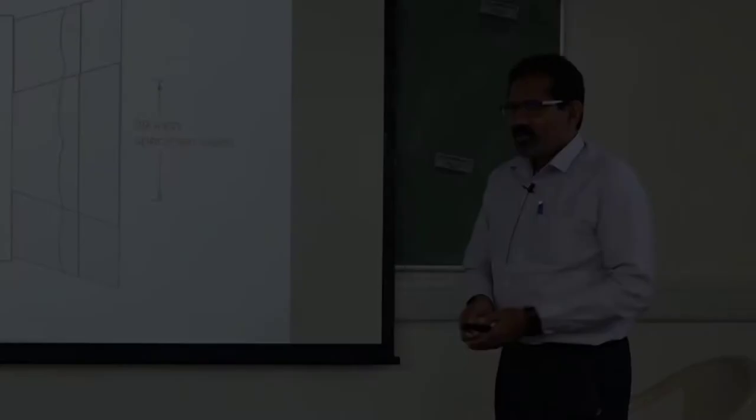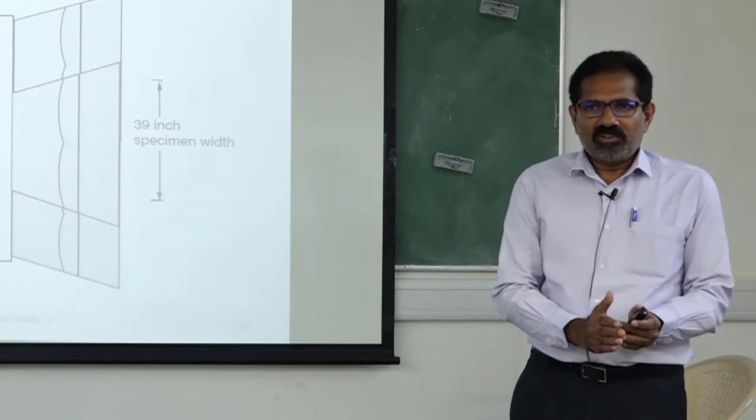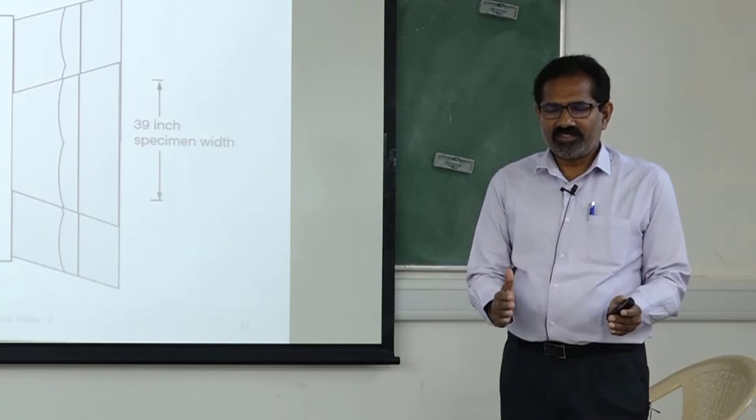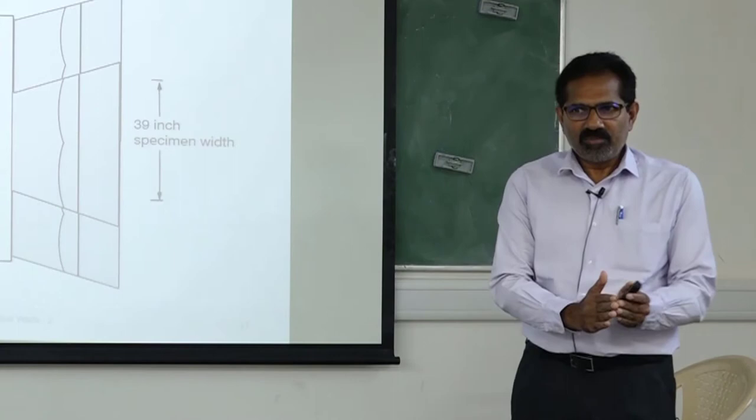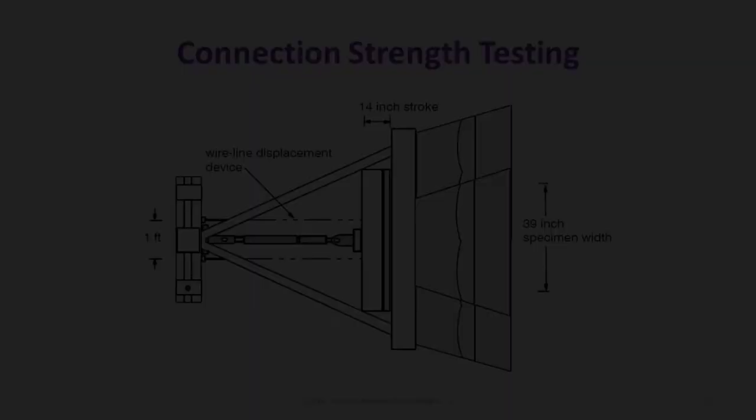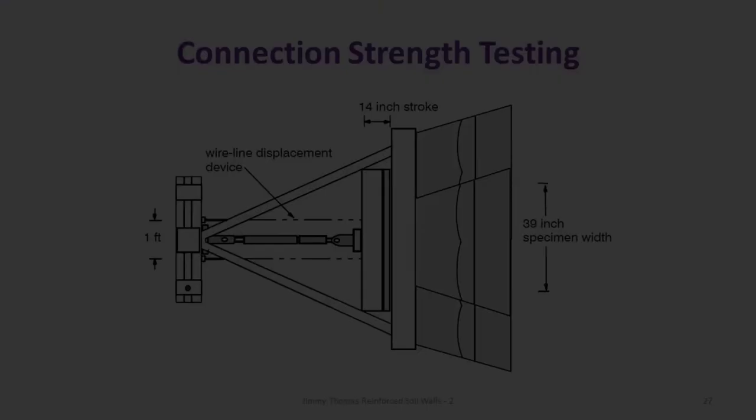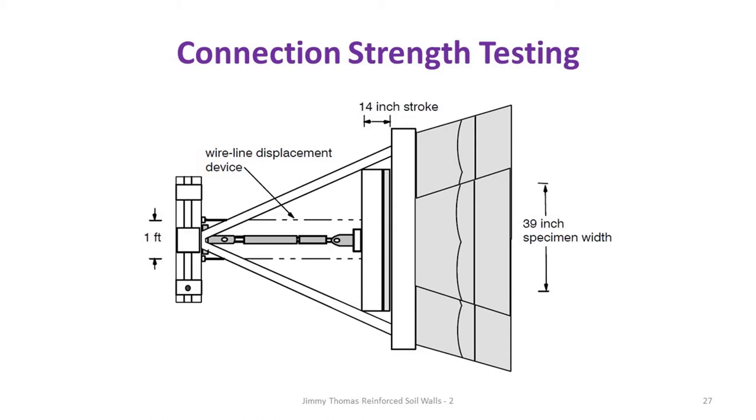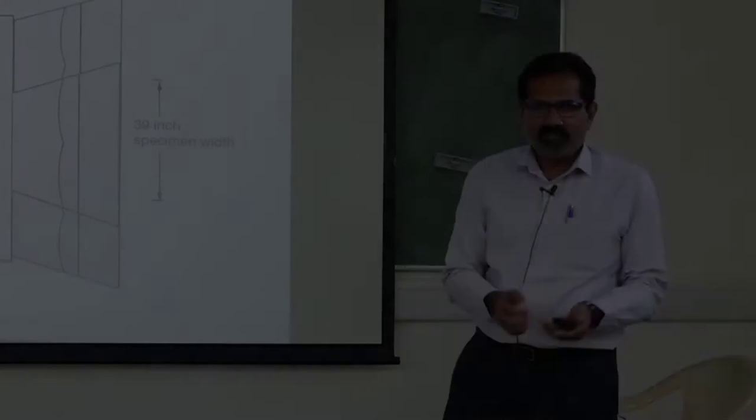Preferably you should test a meter width, then only the differences in block size and the geogrid are captured correctly. If you test only a reasonably narrow width, say 10 centimeters wide, it doesn't reflect the actual situation. Another problem is that the wider the width, the stiffer your grip and system have to be, otherwise you get load variations — you have to pull uniformly. So the wider the specimen, the more difficult the testing becomes.